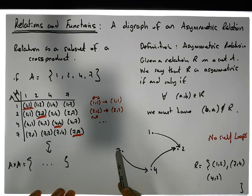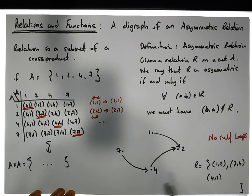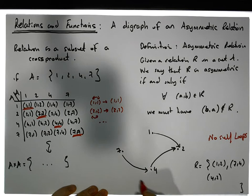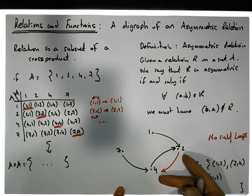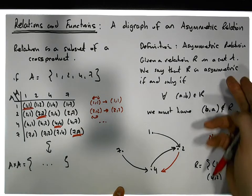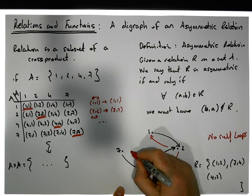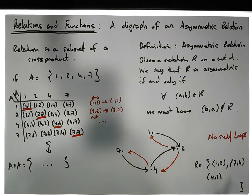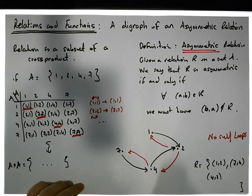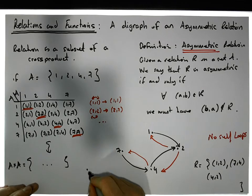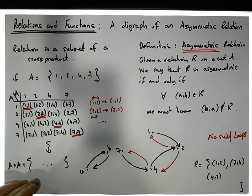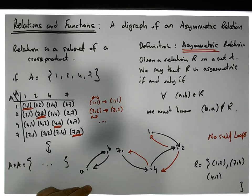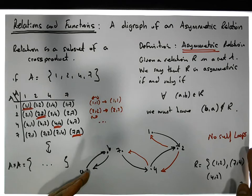You can see that paths are fine — we have a path from 7 to 4 to 2. But we cannot have a bidirectional edge, for example both (4,2) and (2,4) in the relation, because flipping (4,2) gives (2,4) which would then be in the relation, violating asymmetry. So for the digraph of an asymmetric relation: no self-loops and no bidirectional edges. Meet those two conditions and you have an asymmetric relation.